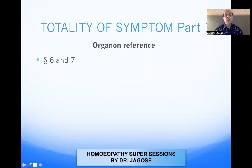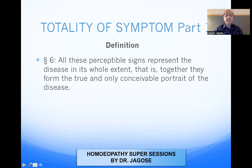Part one is the organon reference. The reference is given in the sixth edition of Organon, written by Dr. Samuel Hahnemann, aphorisms number six and seven. Aphorism six states: all these perceptible signs represent the disease in its whole extent — that is, together, they form the true and only conceivable portrait of the disease. So, whatever perceptible signs are there, whatever you can perceive in its whole extent, together they form the full totality.